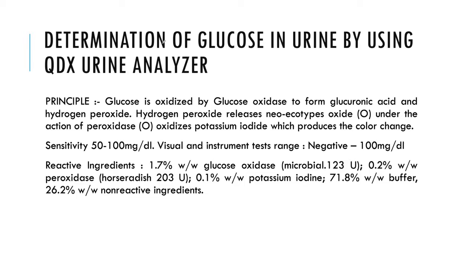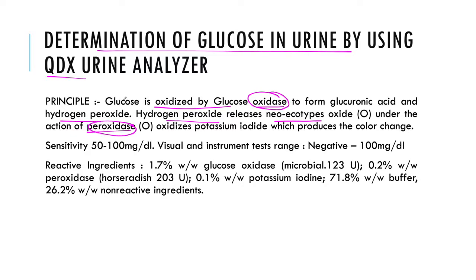You can also determine the glucose in urine by using the QDX urine analyzer. The glucose present in urine can be oxidized by the enzyme glucose oxidase to form gluconic acid and hydrogen peroxide. The hydrogen peroxide then releases nascent oxygen under the action of peroxidase, which oxidizes potassium iodide to produce a color change. The sensitivity is approximately 50 to 100 mg per dL. The reactive ingredients include glucose oxidase, glucose peroxidase, potassium iodine, and buffer.